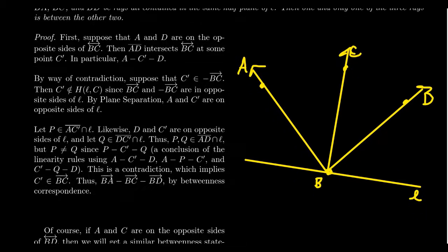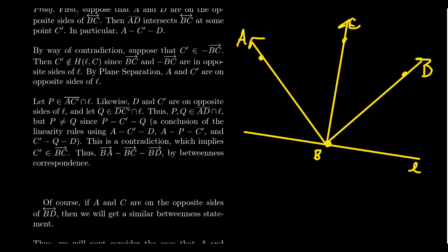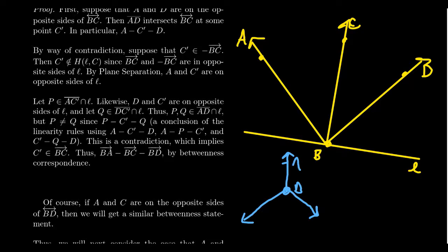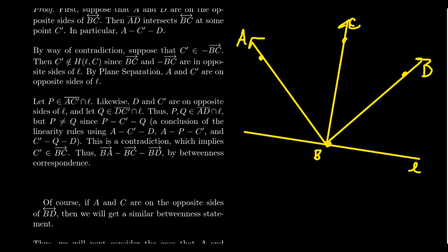Before we prove this theorem, let me mention what can go wrong. If you exit the half-plane, you might get something like: B with A, C, and D no longer in the same half-plane, and we get some ambiguity about who is between whom. Is BC between BA and BD, or is BA between BD and BC, or is BD between BA and BC? So if you take the entire plane, trichotomy falls apart. But if you restrict to just one half-plane — a flat angle — then trichotomy will be upheld.